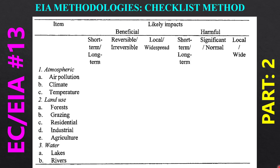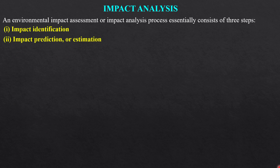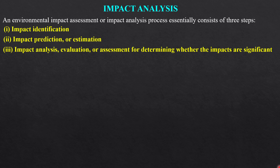In this video, we will learn about the checklist method for assessing impacts. As we know, environmental impact assessment consists of three steps: impact identification, impact prediction, and impact analysis, evaluation, or assessment to determine whether the impacts are significant.